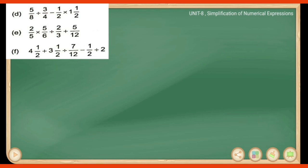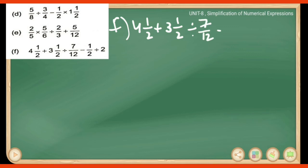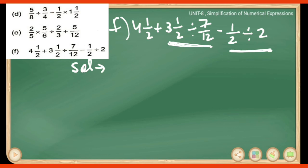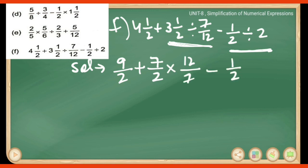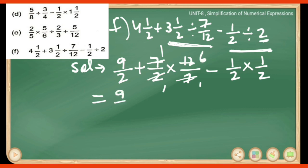Part F: 4 and 1/2 plus 3 and 1/2 divided by 7/12 minus 1/2, and divided by 2. Converting mixed numbers: 4 and 1/2 = 9/2, 3 and 1/2 = 7/2. The division signs convert to multiplication — 7/12 becomes 12/7, and 1/2 divided by 2 gives reciprocal 1/2. After handling all division steps, we get 9/2 plus 6/1 minus 1/4.